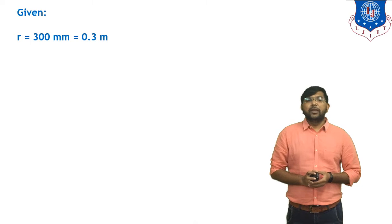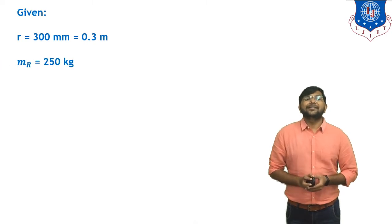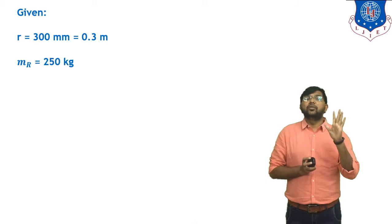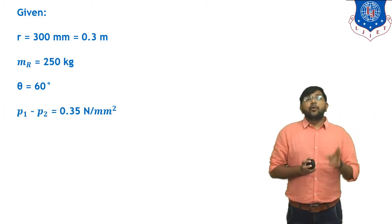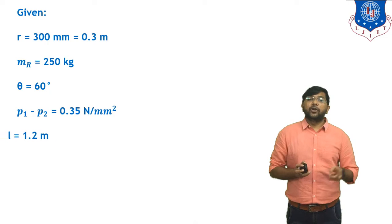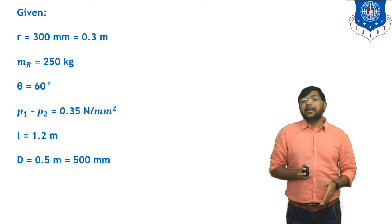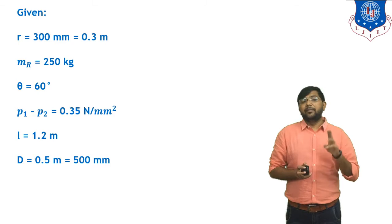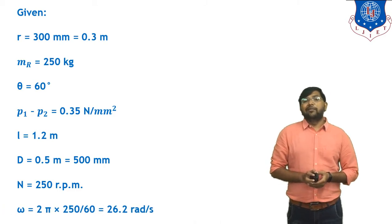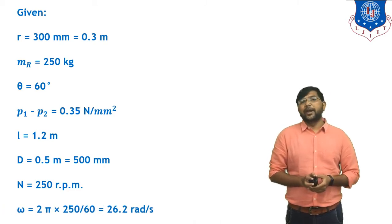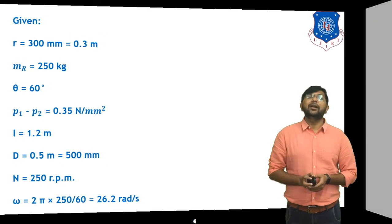Given data: r = 300 mm = 0.3 m; reciprocating mass M_R = 250 kg; theta = 60 degrees; gas pressure P1 − P2 = 0.35 N/mm²; connecting rod length l = 1.2 m; cylinder bore D = 0.5 m = 500 mm; N = 250 RPM. From this, omega = 2πN/60. Substituting N = 250, we get omega = 26.2 rad/s.